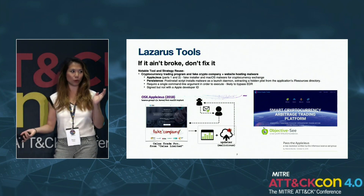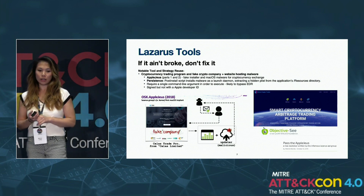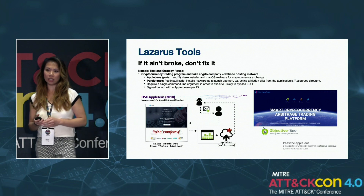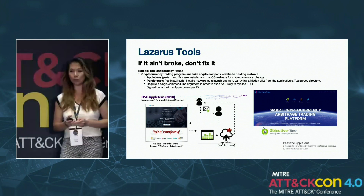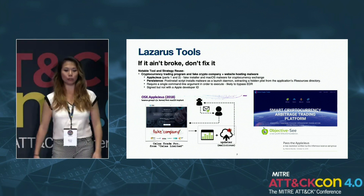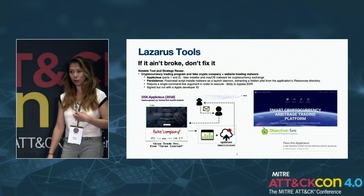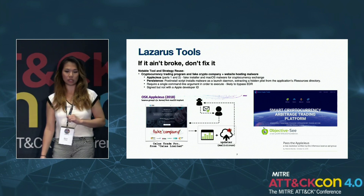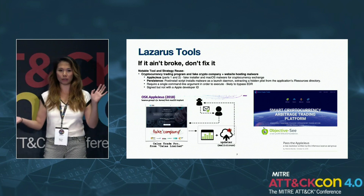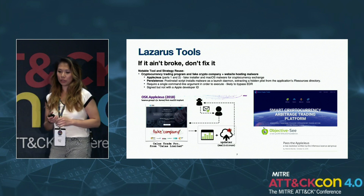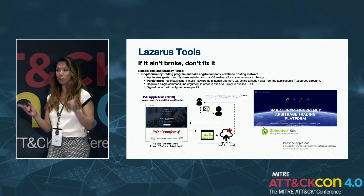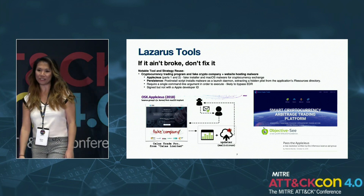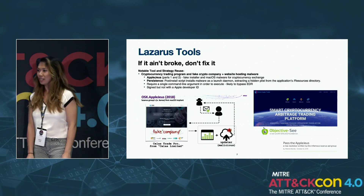So what about their tools? If it ain't broke, don't fix it — they have a lot of tool and theme reuse. Notably AppleJuice: there are about eight versions of this macOS malware targeting cryptocurrency exchanges. They take existing cryptocurrency applications, copy them, and embed their lures. Across all AppleJuice variants, they have a post-install script literally called 'post install' that installs the malware as a launch daemon for persistence. They hide the plist — which for Windows folks is similar to the registry, a file with key-value pairs — stored in the application's resource directory. They sign it, but not with an Apple Developer ID. Their fake websites like 'Union Crypto Trader' look completely legitimate.